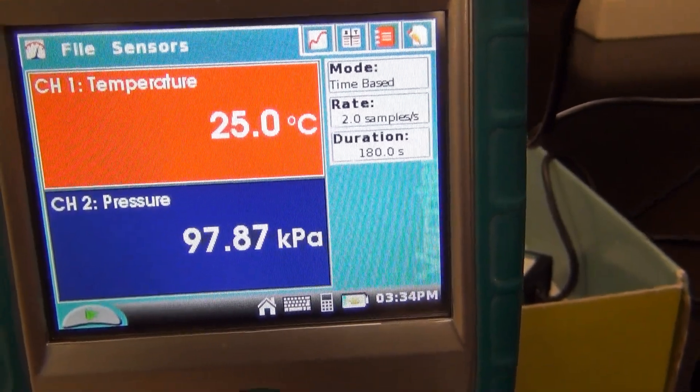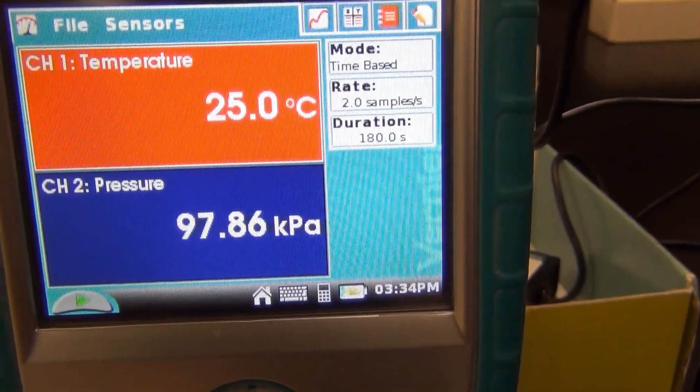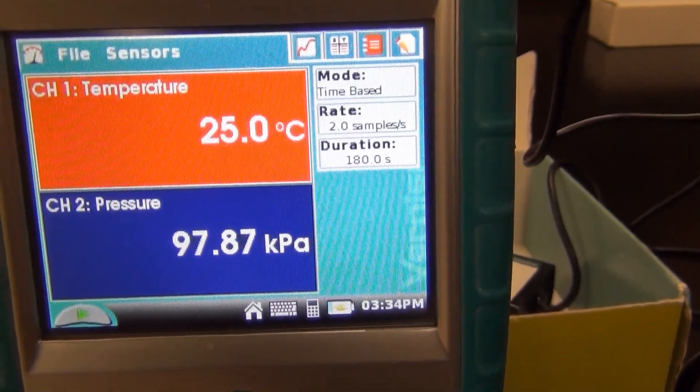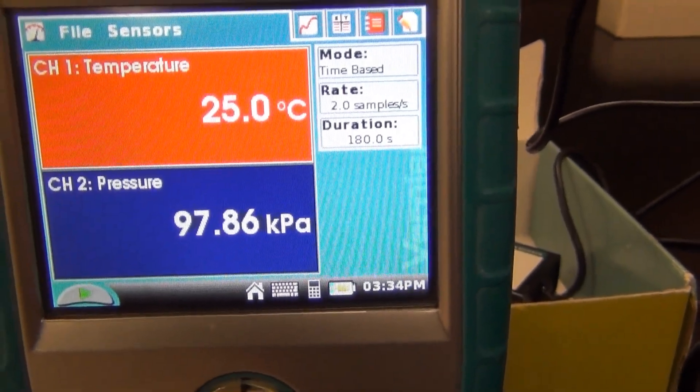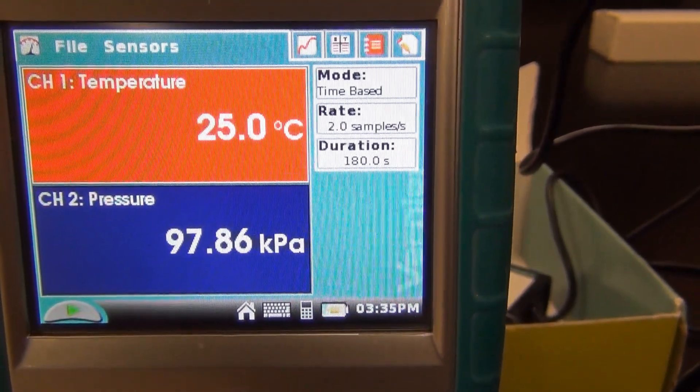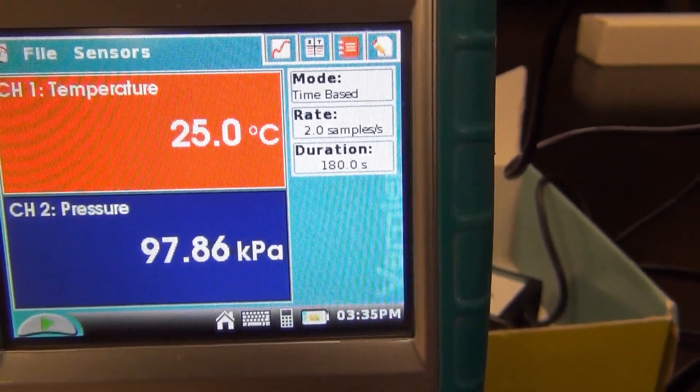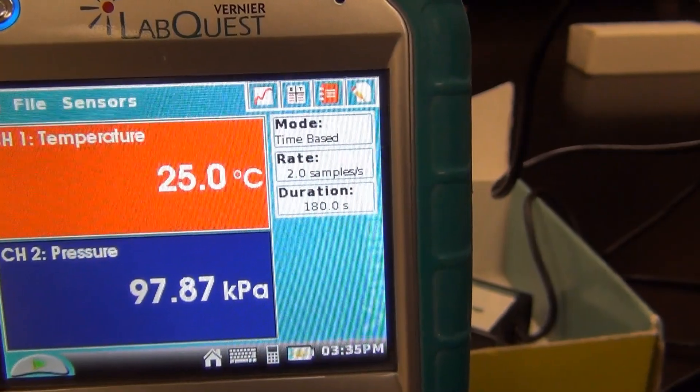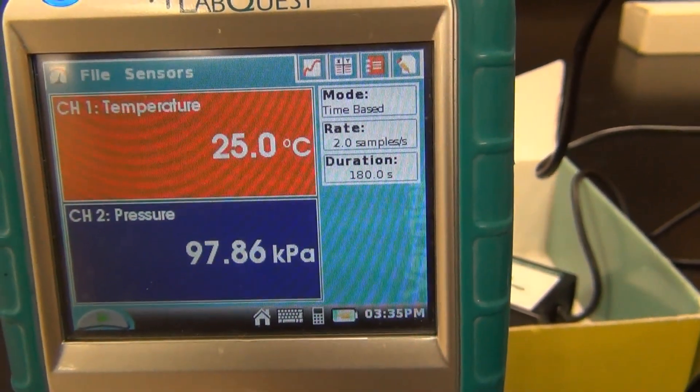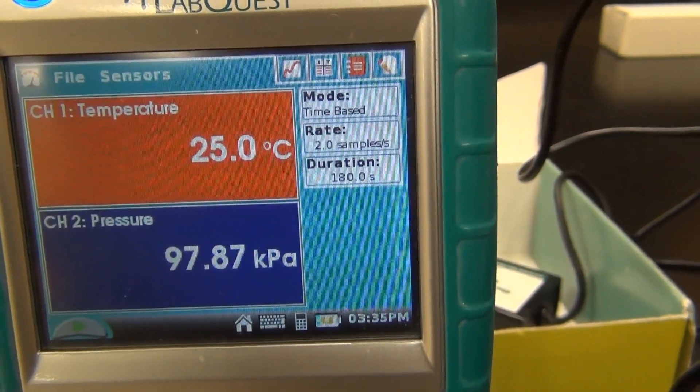This is a gas law experiment. We know we are going to have to be sure we know what the temperature and pressure are in the room. So I hooked up a LabQuest to a temperature probe and a pressure probe. So we have our room temperature and room pressure. So our temperature here is 25 degrees Celsius, or 298 degrees Kelvin, of course. And our room pressure is 97.87 kPa.